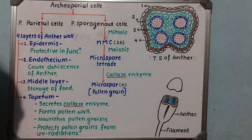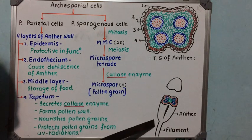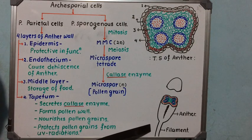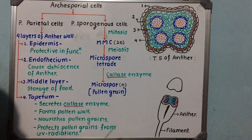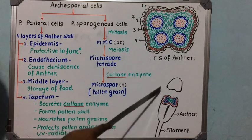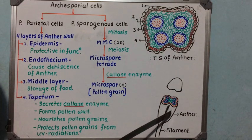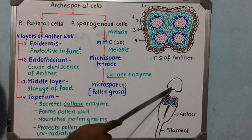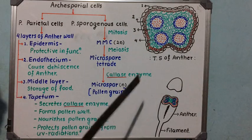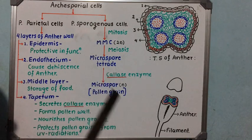Here you are observing the figure of stamen or androecium. The stamen is considered the male reproductive structure of the flower because male gametes are produced in the stamen. In a dithecous anther, there are two lobes, each containing two pollen chambers, giving four pollen chambers total. These four pollen chambers are also known as microsporangia.